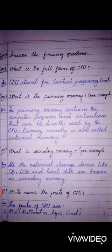Question number 4. Write the name of the parts of CPU. Answer: The parts of CPU are — Number 1: ALU, Arithmetic Logic Unit.